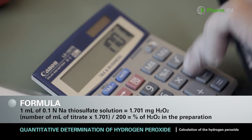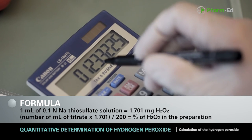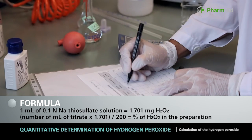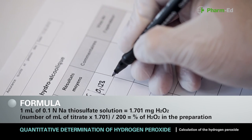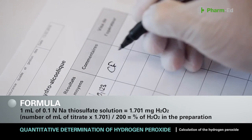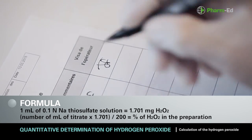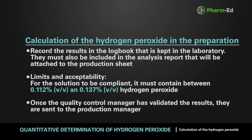The hydrogen peroxide concentration of the sample is calculated using the average of the three measurements. Record the results in the logbook kept in the laboratory. They must also be included in the analysis report that will be attached to the production sheet.